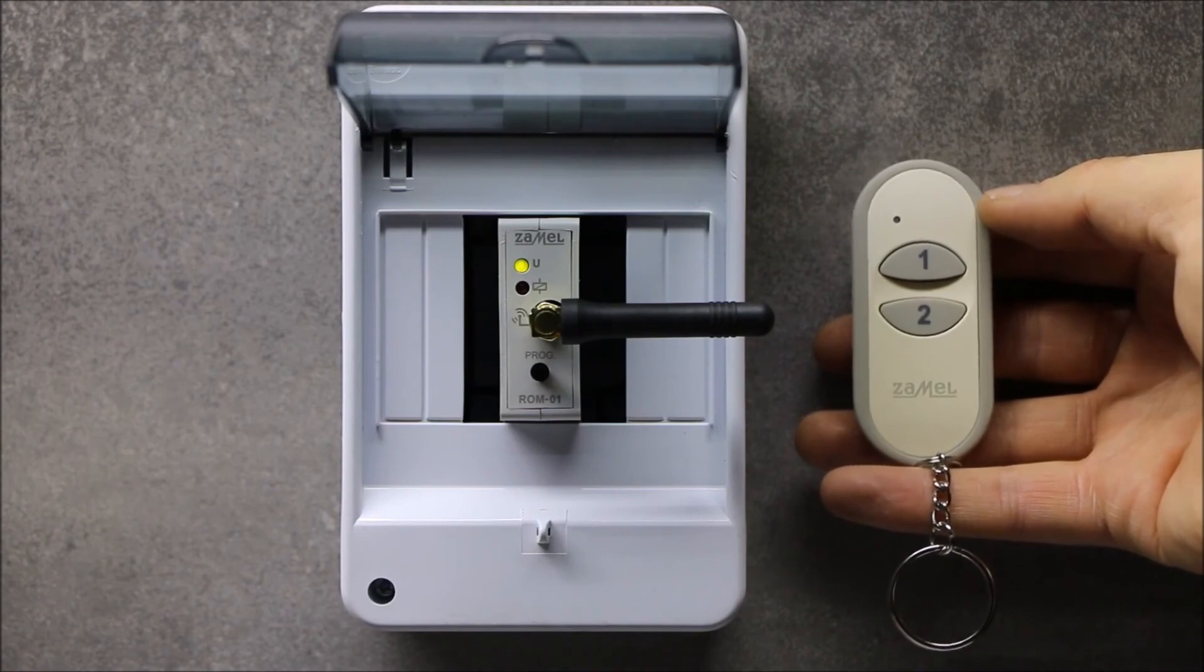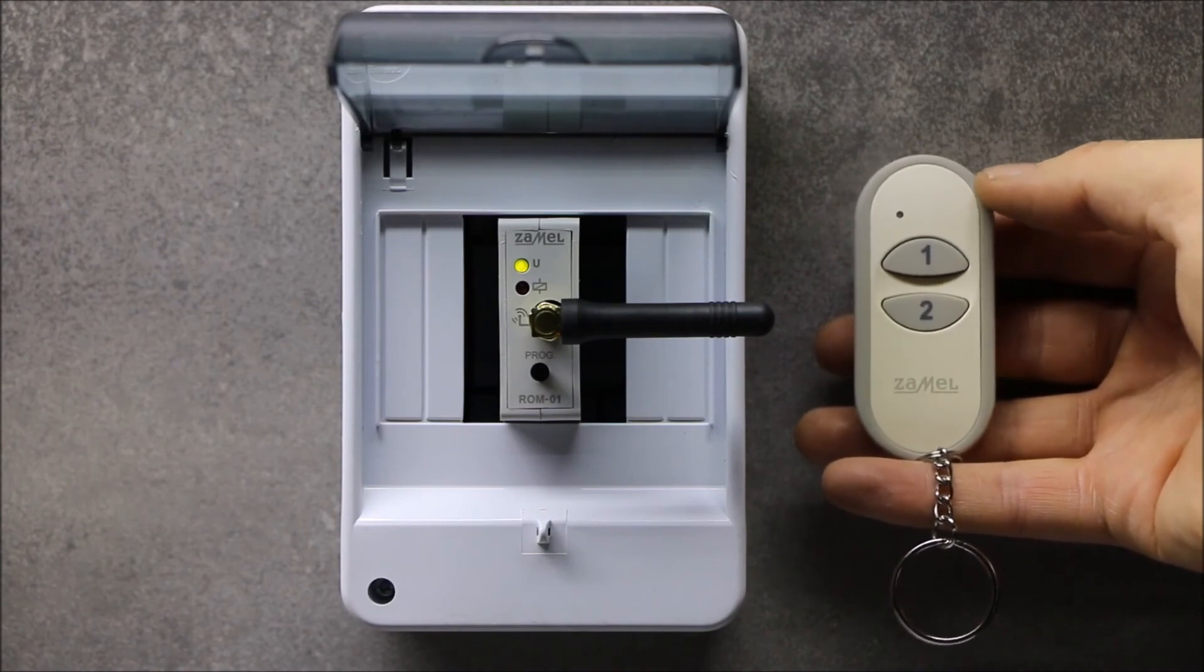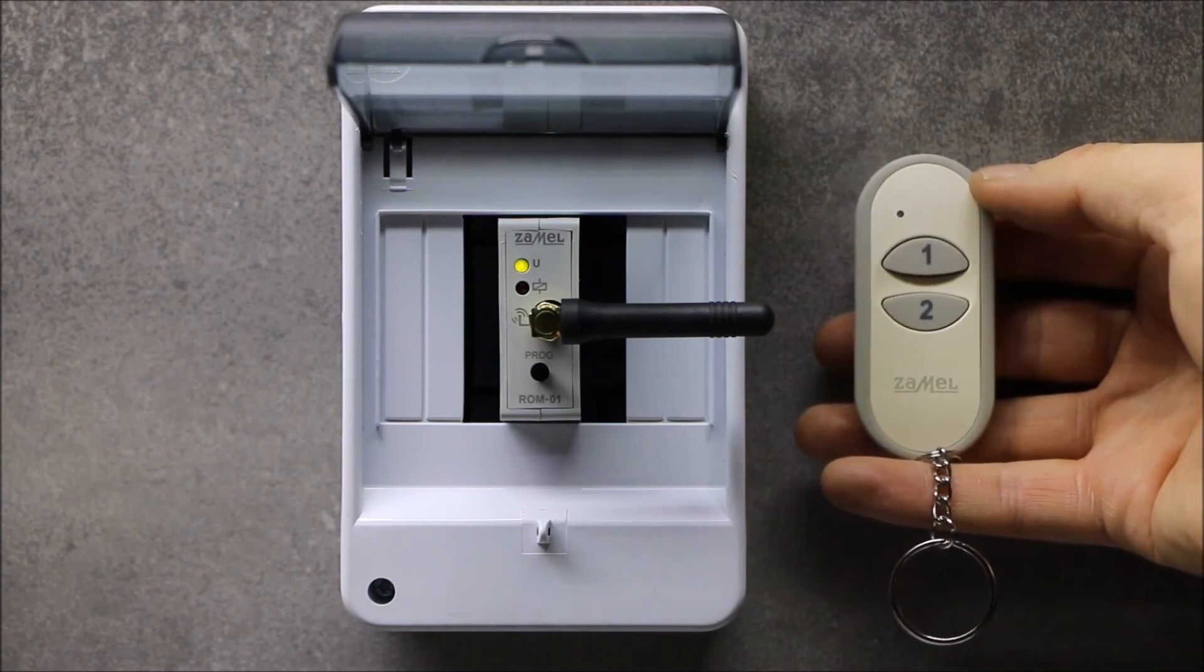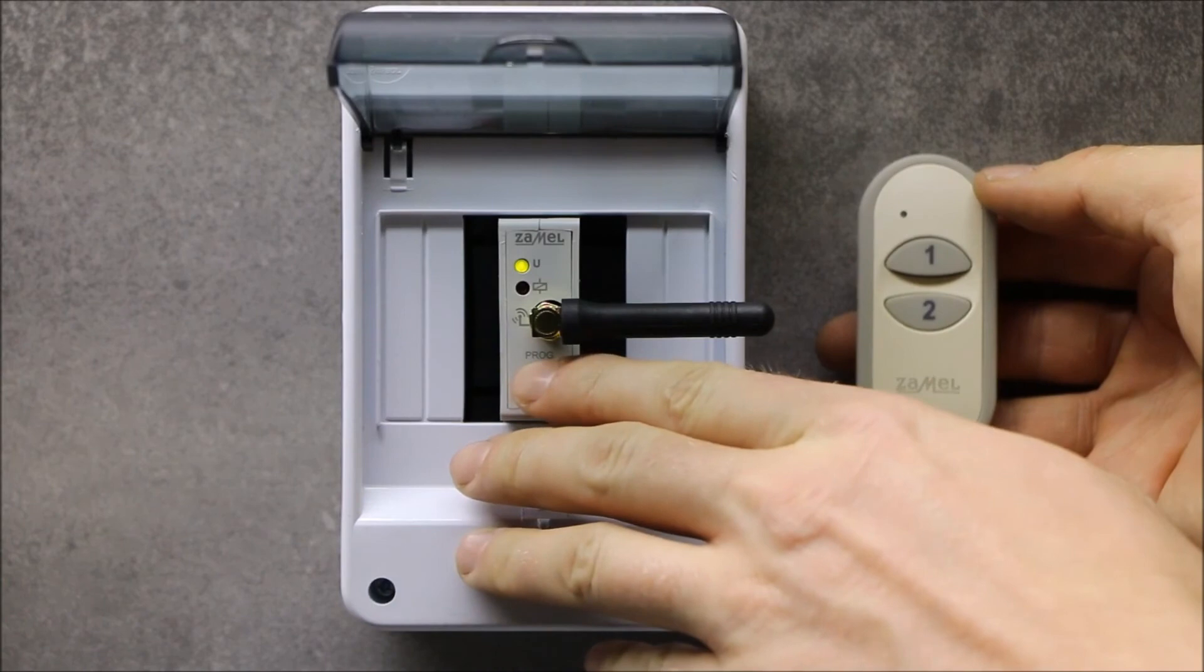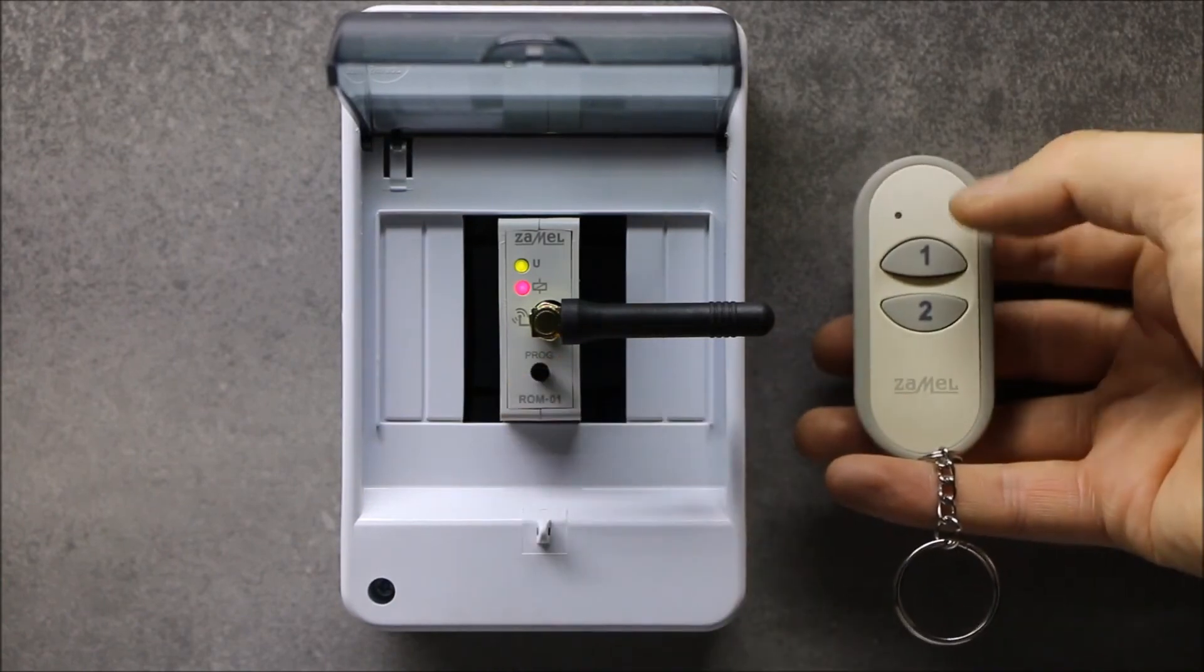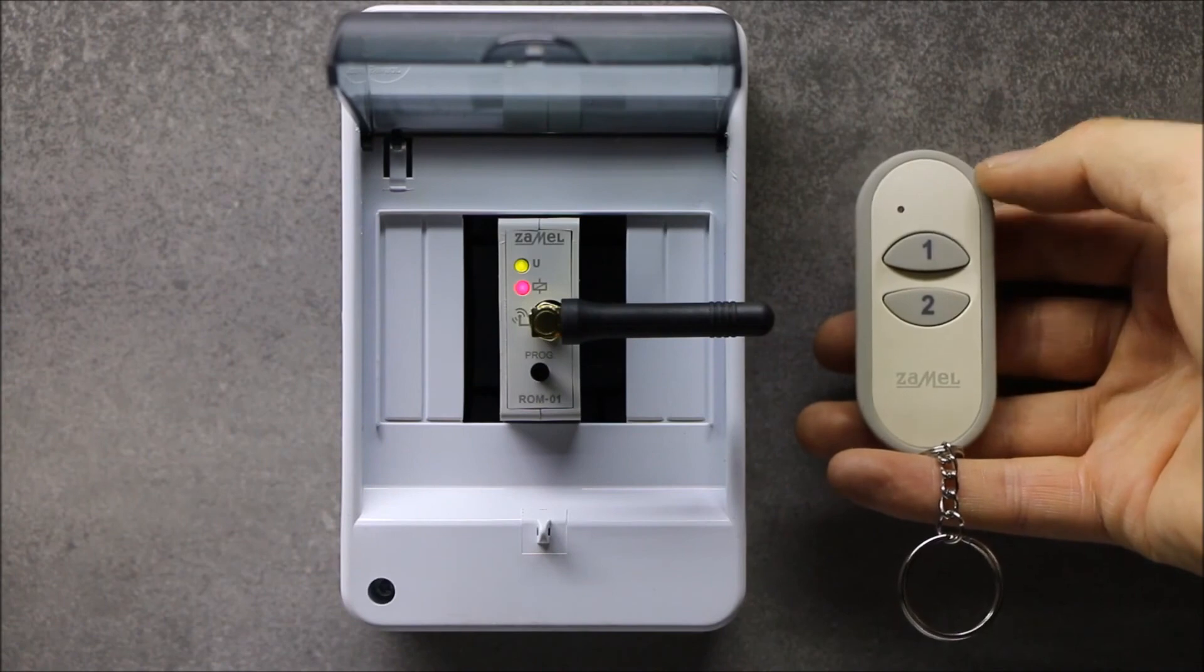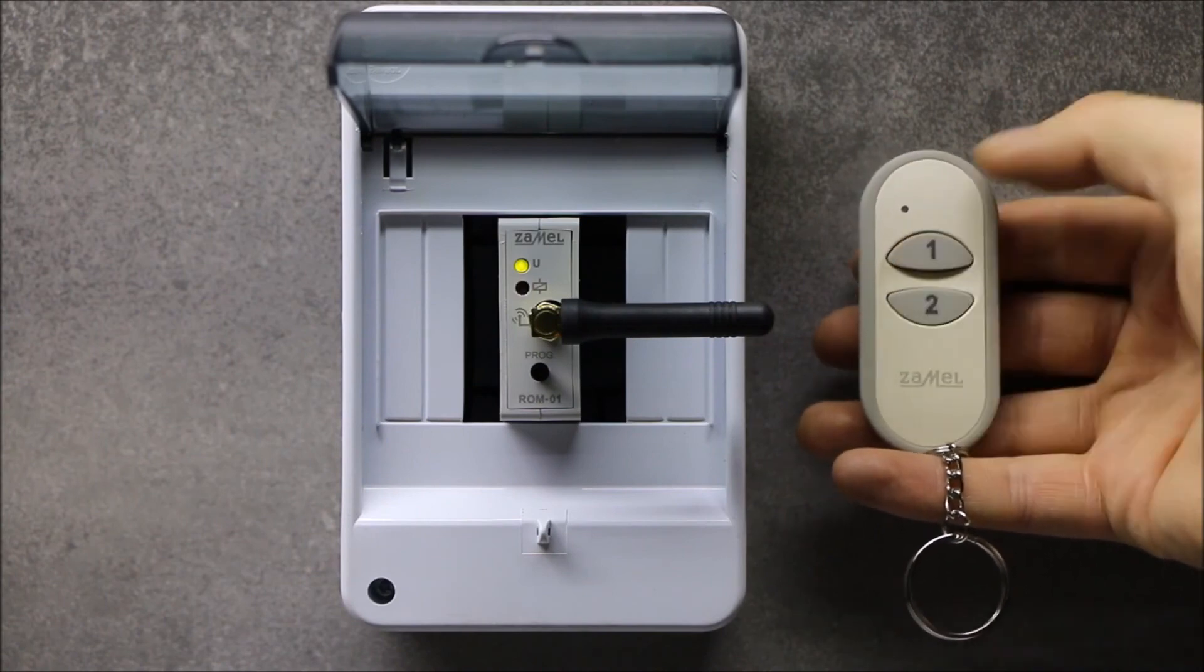In order to program the button in time mode, begin the programming procedure by pressing the PROC button. When the status LED lights up, press the button to be paired into the receiver. When the status LED blinks, press the same transmitter button again.